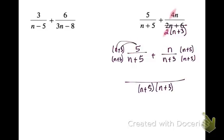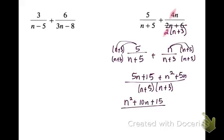On the top, I get 5n plus 15, plus n squared, plus 5n. Combining like terms gives n squared plus 10n plus 15, all over n plus 5 times n plus 3. Now I check if the top quadratic factors — I need something that multiplies to 15 and adds to 10. The only factors of 15 are 1 and 15, or 3 and 5, and none of those add to 10. So this is just my final answer.